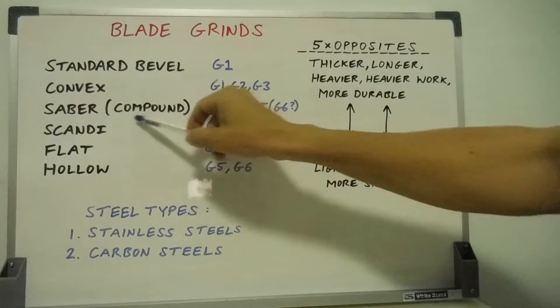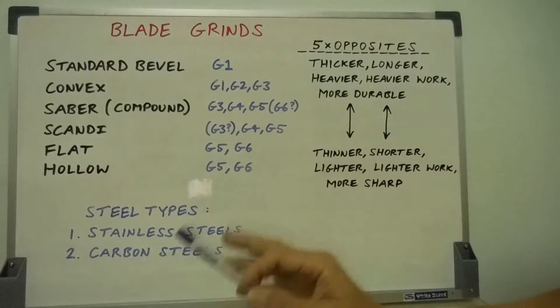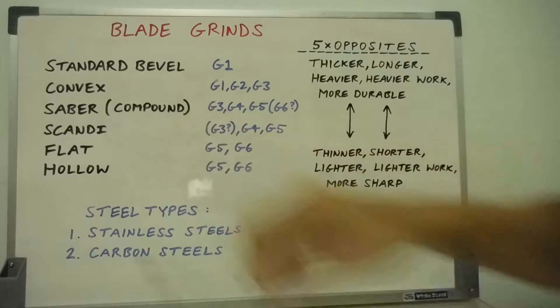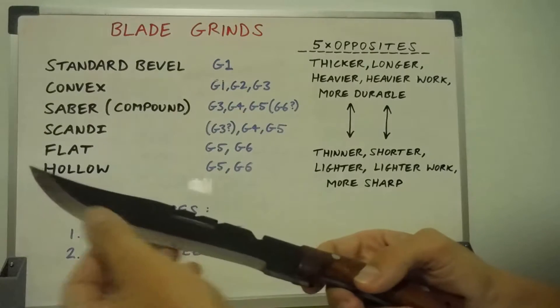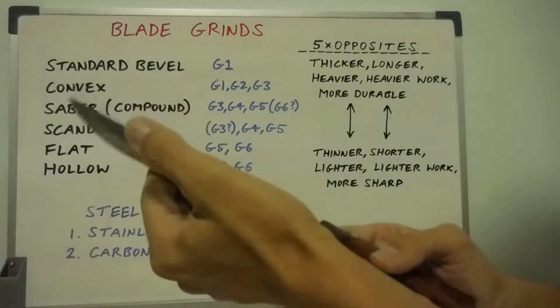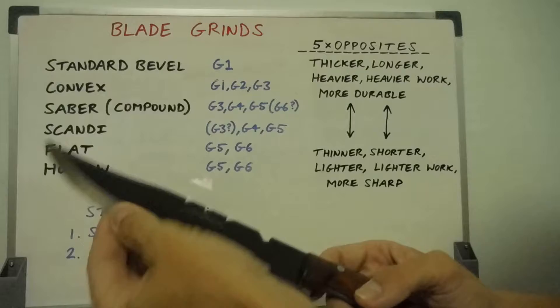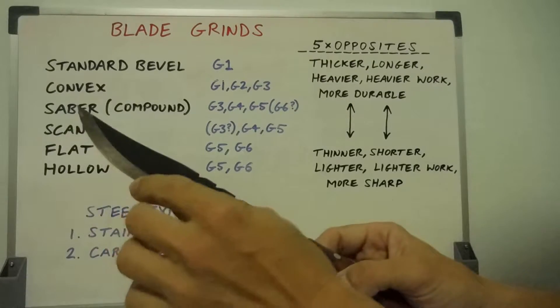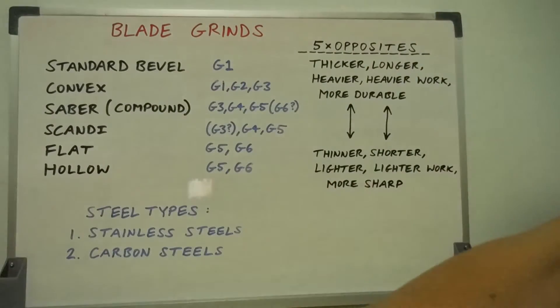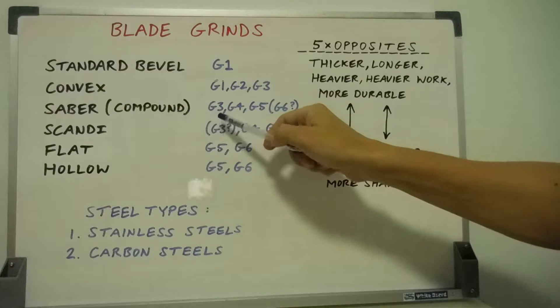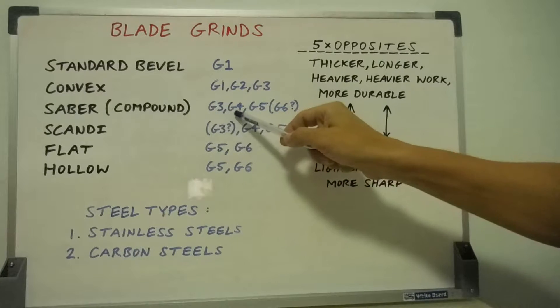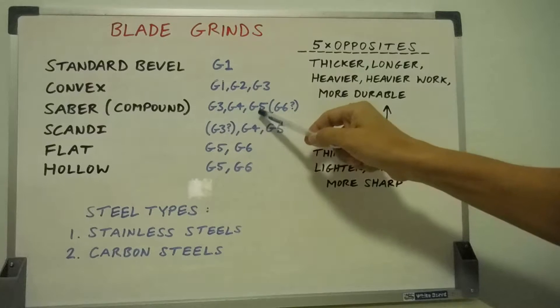The saber grind, compound bevel, which I think is more durable than a scandi grind. Anytime you put a secondary or a primary bevel or a micro bevel onto a blade, it's going to become more durable straight away because the angle at the end becomes more obtuse. The saber grind is good for group three main working knife, group four smaller working knife, and the group five camp knife.